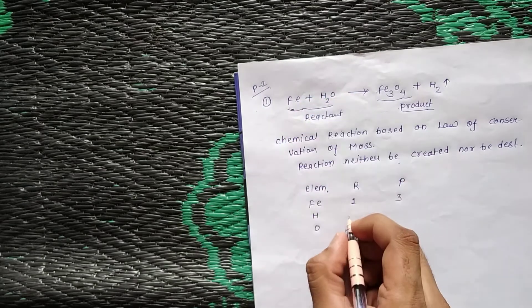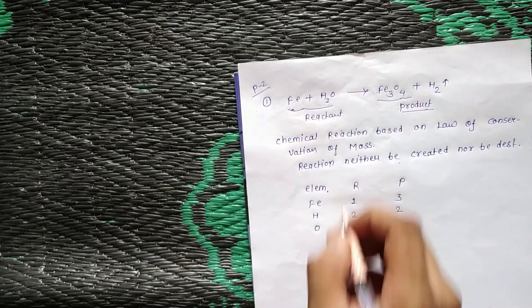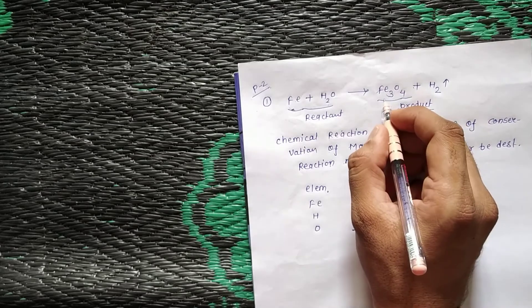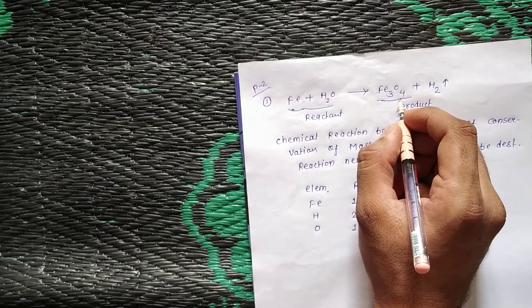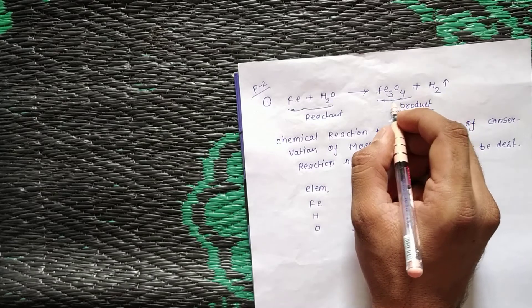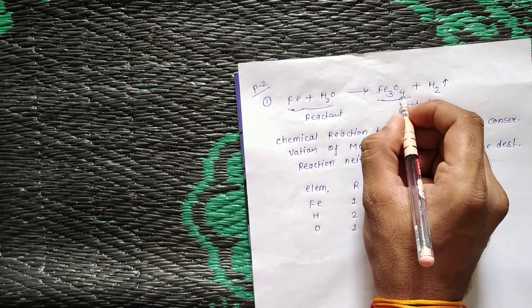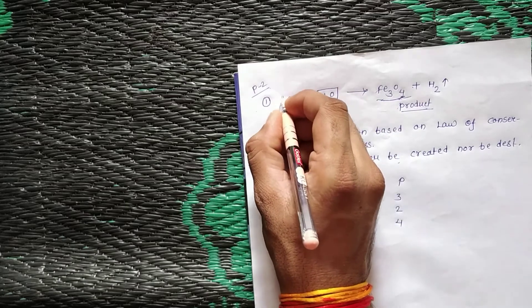Looking at reactant and product, we have iron, hydrogen, and oxygen. We have to start from the compound in which we have the maximum number of atoms, which is oxygen here.